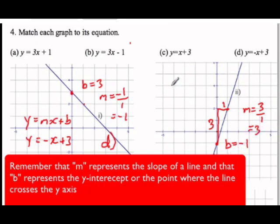So if we're going to write our equation y equals mx plus b, m is 3, so this is y equals 3x minus 1. And so that means that this graph is b.